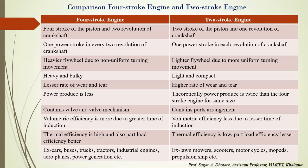In a four-stroke engine, a heavy flywheel is needed because the power stroke is a single stroke followed by three non-power strokes, resulting in non-uniform turning moment and requiring a heavier flywheel. In a two-stroke engine, there is more uniform power distribution, so a lightweight flywheel is sufficient for balancing. Four-stroke engines are heavy and bulky, while two-stroke engines are light and compact.